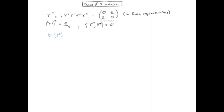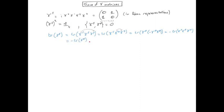So let's start with the trace of a single gamma matrix. The trick is to multiply by the identity in the form of gamma-5 squared. Then we use the cyclicity of the trace, and then the anticommutation property of gamma-5 with gamma-mu. Since gamma-5 squared is just 1, when something equals minus itself it must be 0. So the trace of one gamma matrix is always 0.